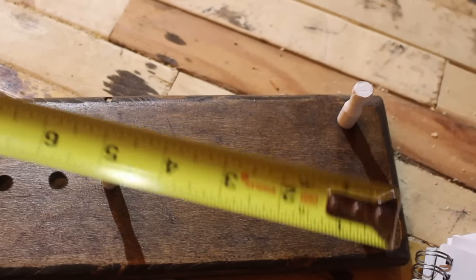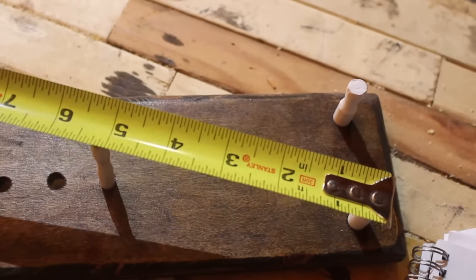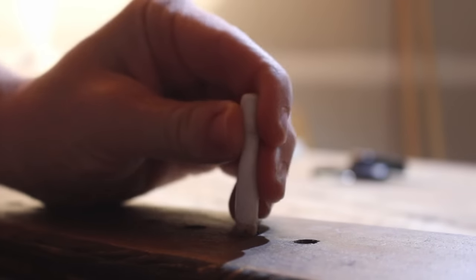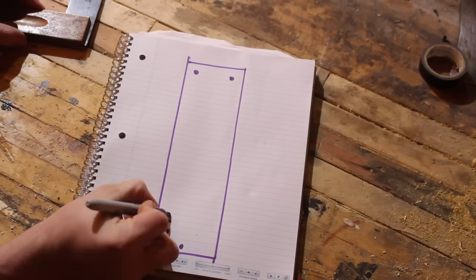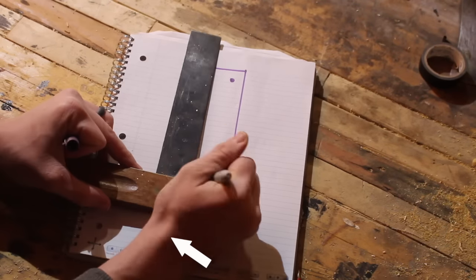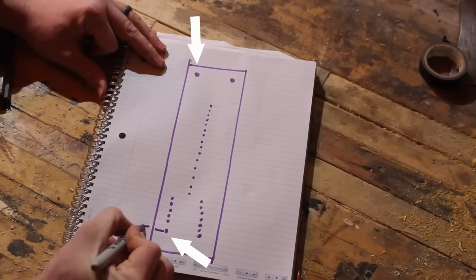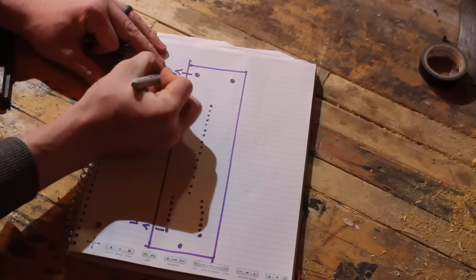If you made the same bowstring jig I did you can just use my numbers here. If yours is a different size you're going to want to do these calculations. So I measured out what dowel hole corresponds with what string length. And how you do that is you want to measure from the bottom left dowel up to the top left dowel. And that for me was 24 inches.